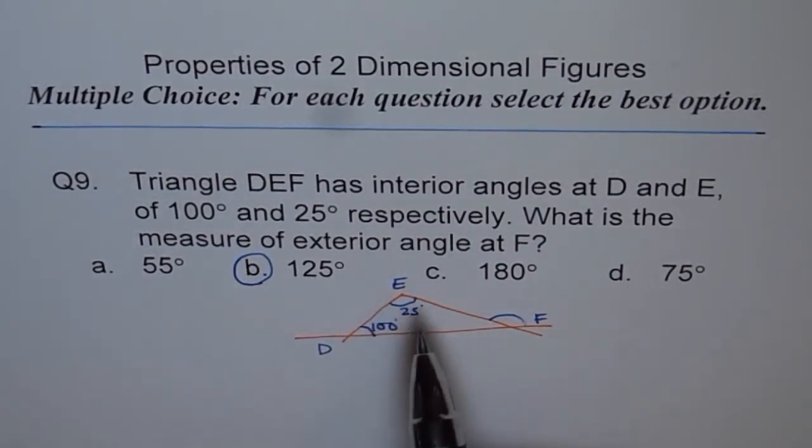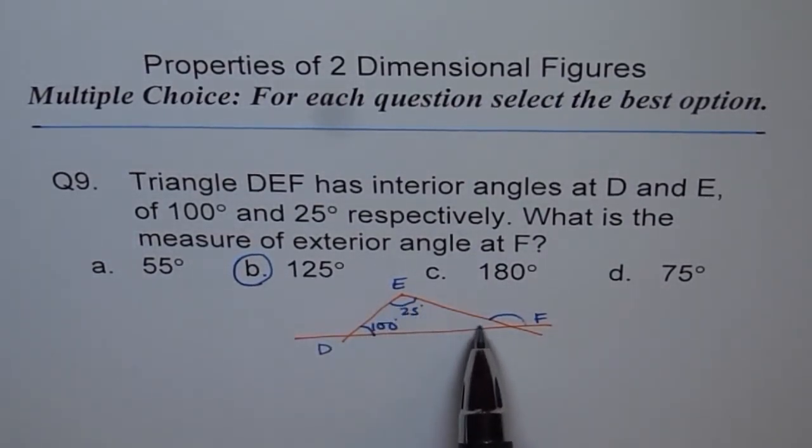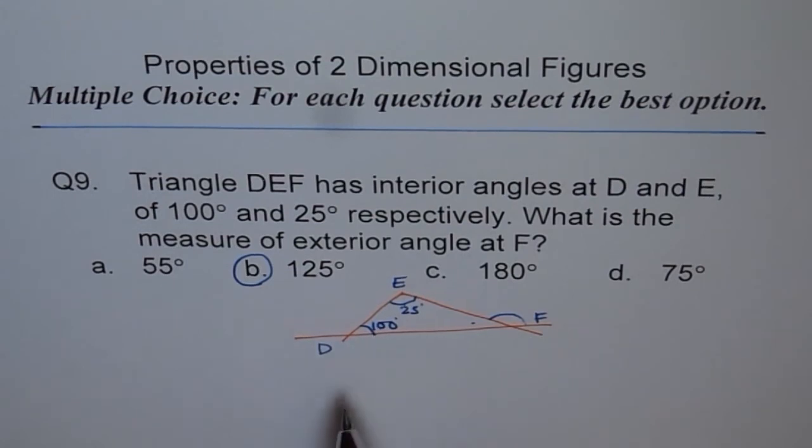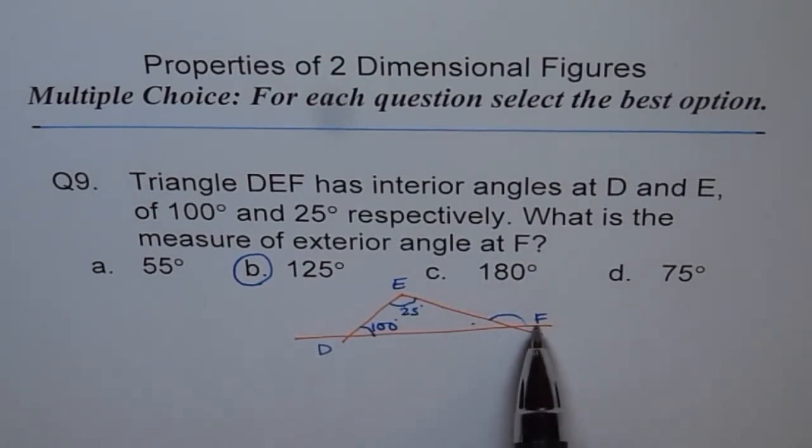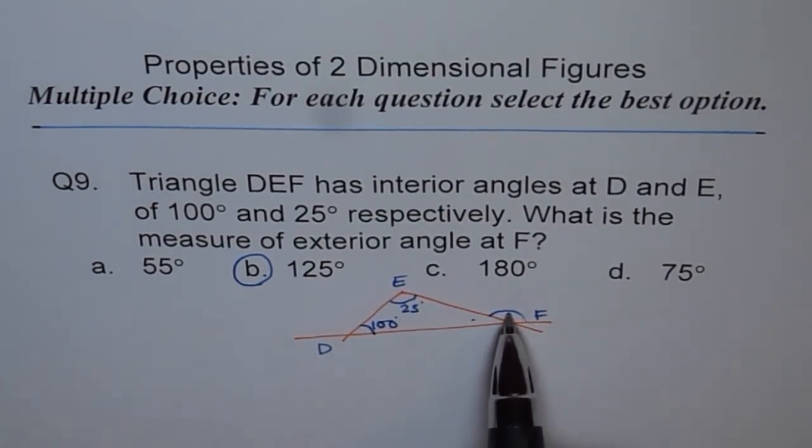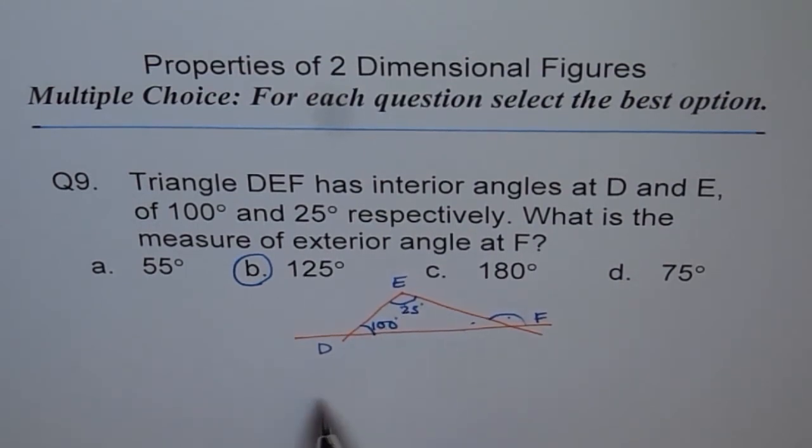Well, you can also think like this. The sum of angles of a triangle is 180. Therefore, this angle will be 180 minus the sum of these two. But the line also makes 180. Therefore, this angle is 180 minus that, which gives you this.